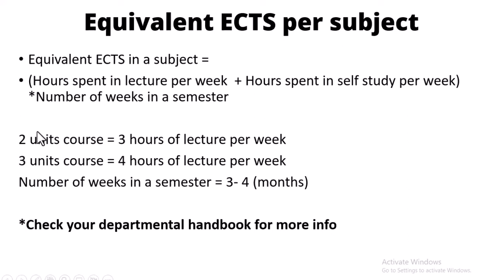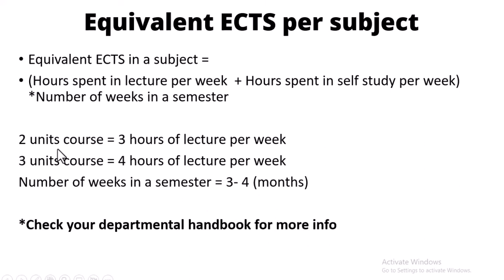A two-credit-unit course has three hours of lecture per week, and a three-credit-unit course has four hours of lecture per week. A semester is usually three to four months: a four-month semester gives 16 weeks, and a three-month semester gives 12 weeks. You can refer to your departmental handbook for details on credit units, hours per week, and semester length.